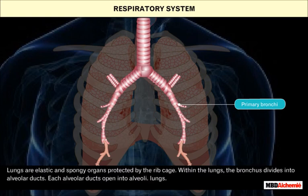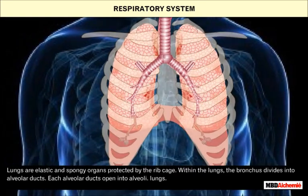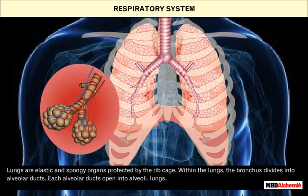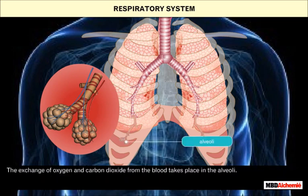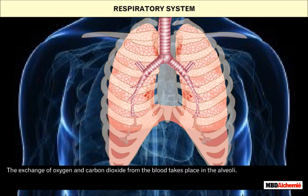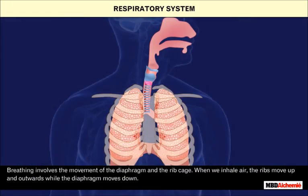Lungs are elastic and spongy organs, protected by the ribcage. Within the lungs, the bronchus divides into alveolar ducts. Each alveolar duct opens into alveoli. The exchange of oxygen and carbon dioxide from the blood takes place in the alveoli.